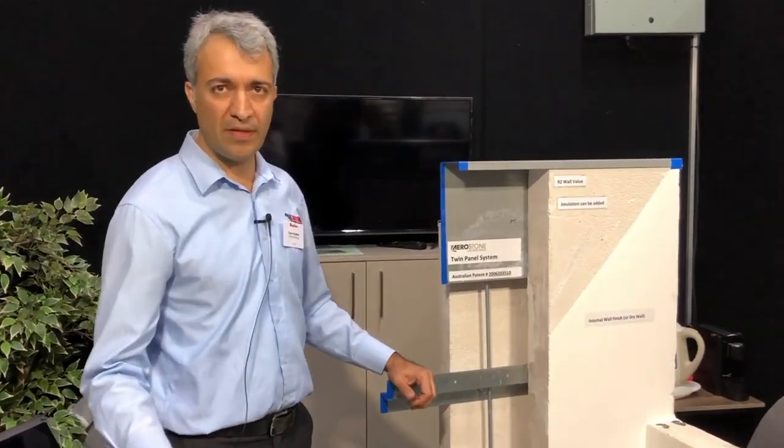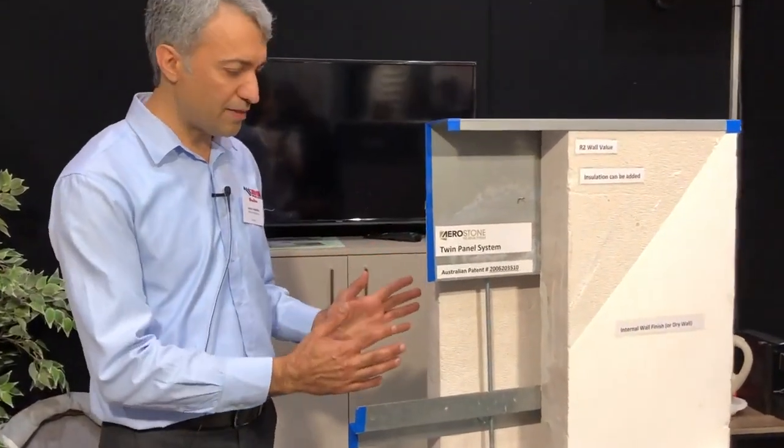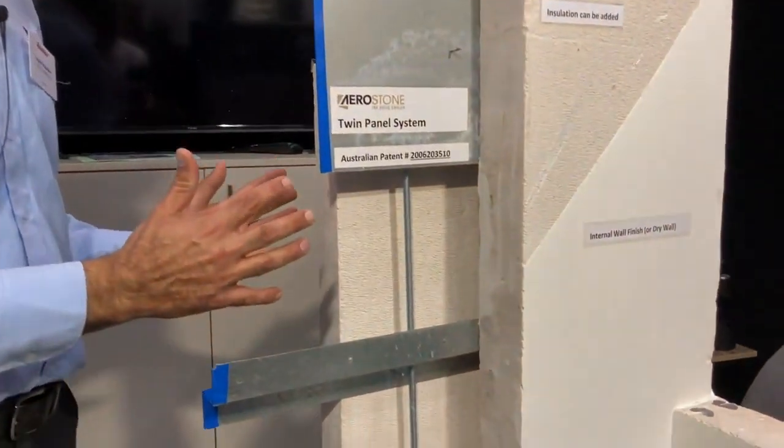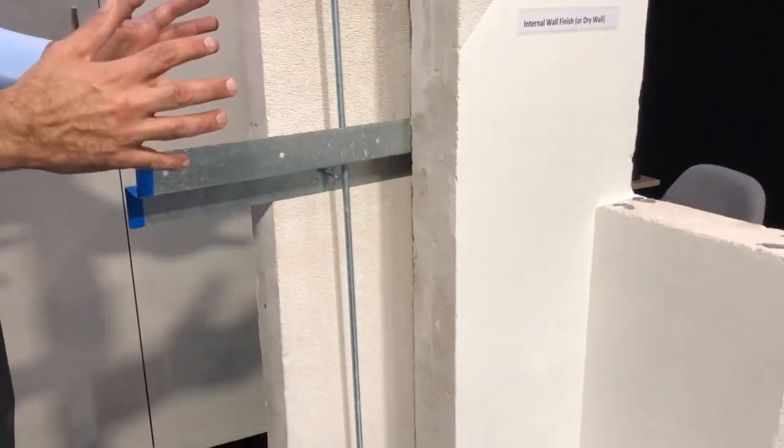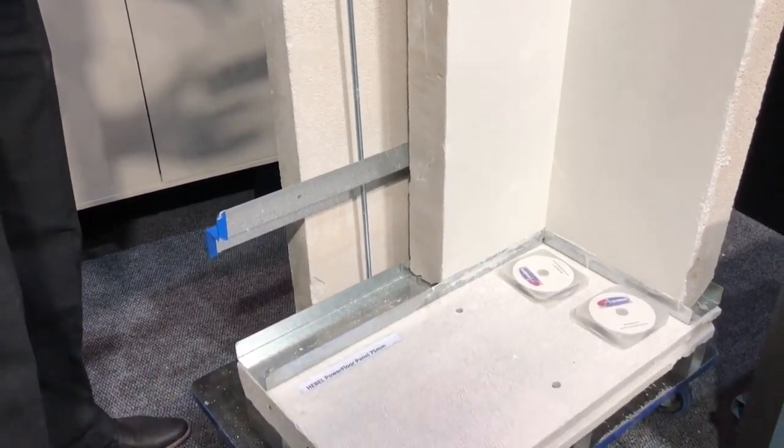If you're building your house in the next couple of years, this is the product you'll be looking at. This is Hebo aerated concrete panel that can replace normal masonry brick, double brick houses.